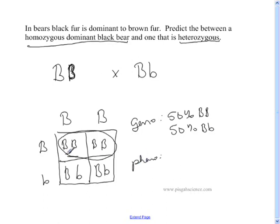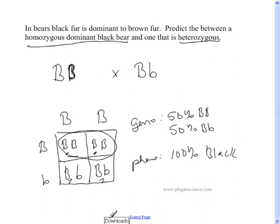For phenotype, since black is our dominant color, all four boxes have at least one capital B, so 100% of them are going to be black. This is our completed answer: Punnett square, genotype, and phenotype.